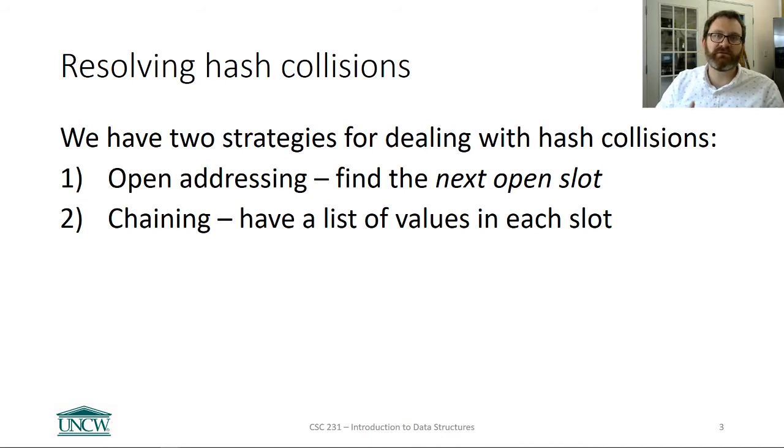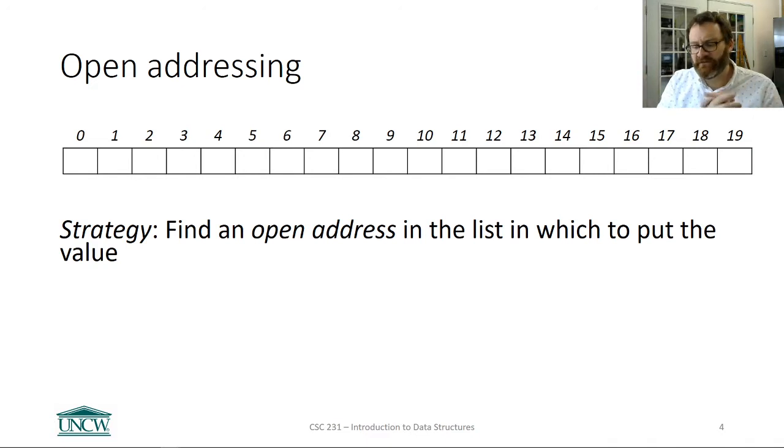So one way to get around them is to have better hash functions. For example, the modulo hash function isn't so great. You get a lot of hash collisions with it. The mid squares is quite a bit better in terms of that. So the first step to dealing with hash collisions is to avoid them in the first place. And you can do that in two ways: One, use a good hash function. Two, make the table bigger. If there's more slots for you to hash down into, the less likely you'll have a hash collision.